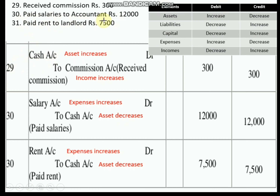Next transaction: paid salaries to accountant. Salary is an expense; when an expense is paid, that expense is increasing, so when expense increases, it should be debited — salary account is debited. We paid salaries in the form of cash; we need not consider the accountant in the journal entry because we paid cash. Journal entry: Salary account Dr. to Cash account.